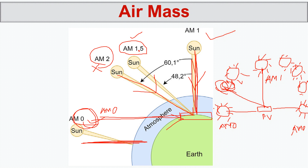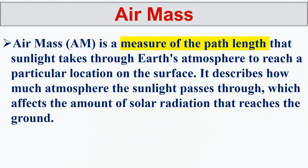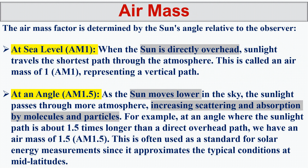So this is air mass — a relative distance. The shortest distance is when the sun is perpendicular. As we move away, the distance becomes longer. To give a quick review: air mass is a measure of the path length that sunlight takes through Earth's atmosphere to reach a particular location on the surface. It describes how much atmosphere the sunlight passes through, which affects the amount of solar radiation that reaches the ground. Simply: if air mass is one, it's easy for solar radiation to reach the panel; if it's two, it's difficult.